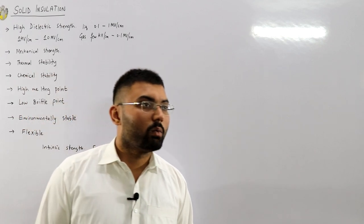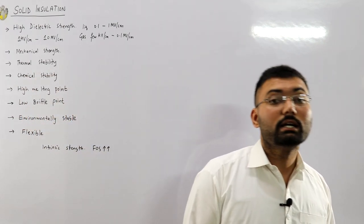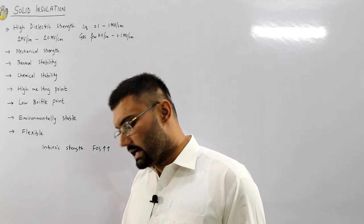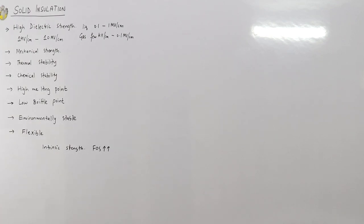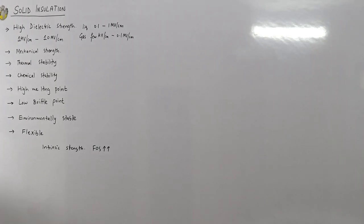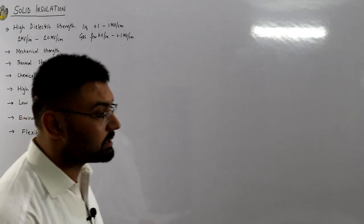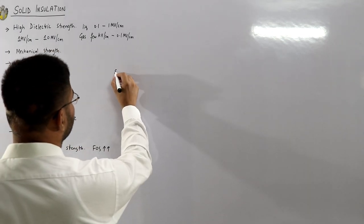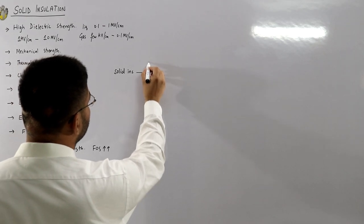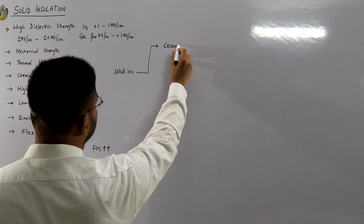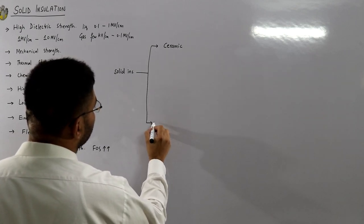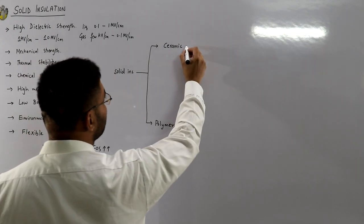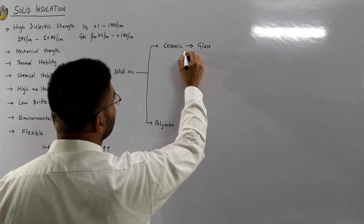Physically, solids have strong bonds and a fixed lattice structure. From an electrical perspective, solid insulation is classified into two categories: ceramic/glass and polymers. In the ceramic category, you have glass and porcelain, which are high voltage insulators.